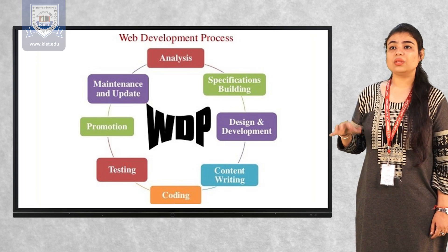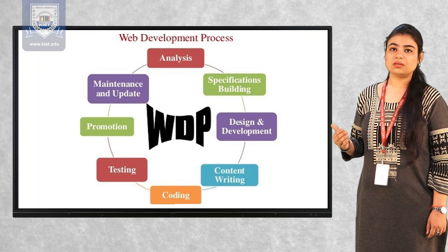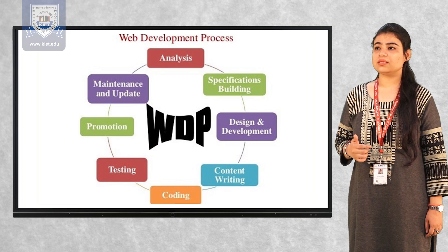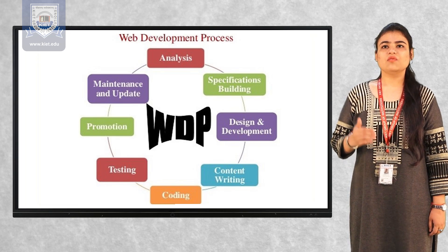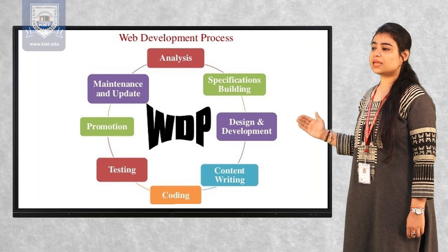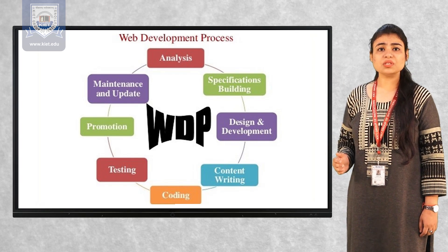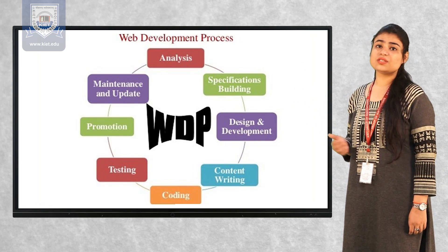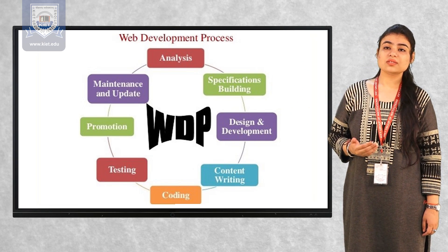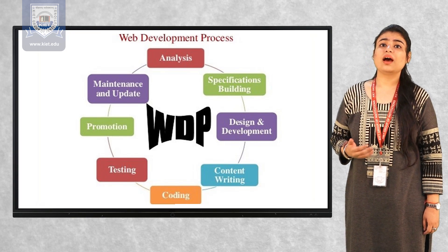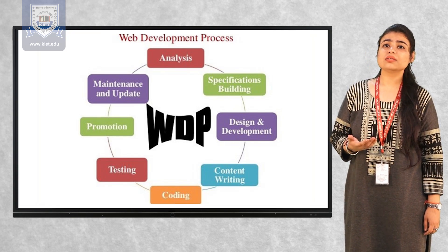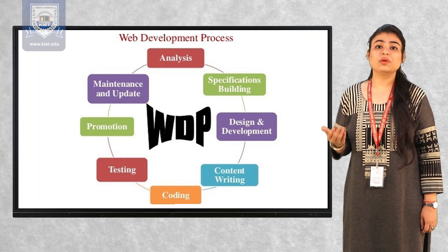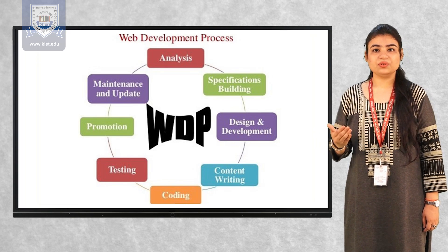Before understanding the different kinds of languages, we should know how the web development process occurs. For the proper functioning of a web project, it is very necessary to understand the web development process. It consists of different steps and phases. The first is the analysis phase, whose primary goal is to understand the target audience or client and what they require. We determine the purpose, goals, and objective of the web project and accordingly take the process further.